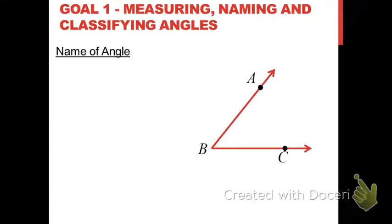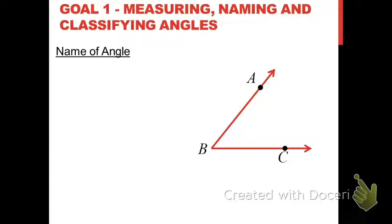Now we can talk about how you actually name an angle, now that you know what the sides and the vertex are. If I asked you what you consider to be the most important point on an angle, I hope you'd agree that the vertex seems to be the most important point, because that's where the two sides come together. It's possible to name an angle simply by naming its vertex in many cases. We can just call this angle B. Whenever you're naming an angle, you always use that little angle symbol followed by the vertex.